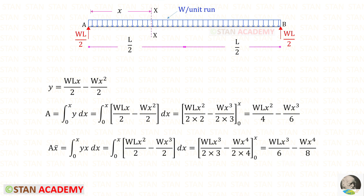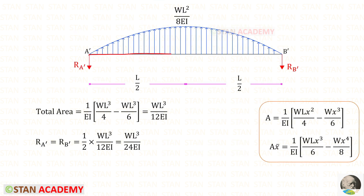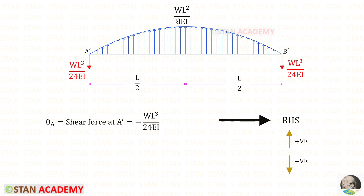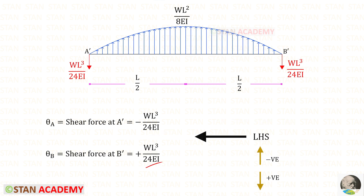For the conjugate beam we have to divide the moment by EI, so these two terms should be divided by EI. The total distance is l, so to find the total area we apply x = l, giving us the total area. R_A' and R_B' are the total area divided by 2. Then we can find the slope at both ends.